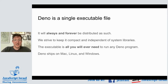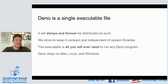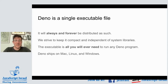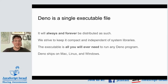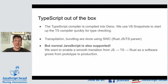One thing you'll notice is that Deno is a single executable file. We do not distribute a tarball full of header files and ancillary directories — it's a single file, and it will always be distributed as such. We try to keep it as compact and independent of system libraries as possible. This executable is all you ever need to run any Deno program, making it really accessible for small scripting tasks. We ship on Mac, Linux, and Windows.